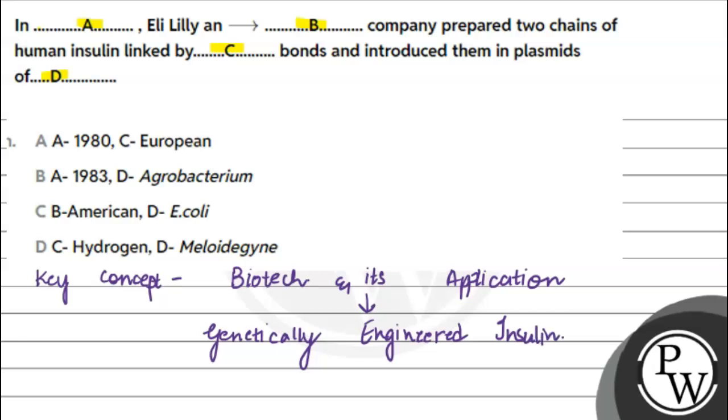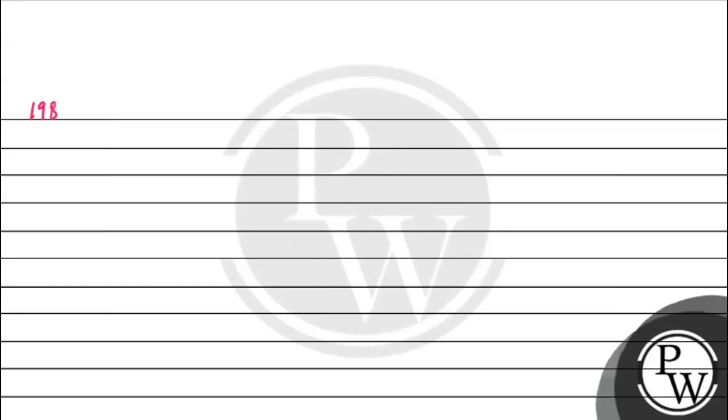Let's see how it was made. In the year 1983, an American company, whose name was Eli Lilly, made this insulin. How they did it?